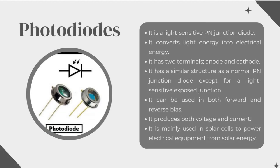Photodiodes. A photodiode is a light-sensitive PN junction diode that converts light energy into electrical energy. It has two terminals: anode and cathode. It has a similar structure to a normal PN junction diode, except for a light-sensitive exposed junction. It can be used in both forward and reverse bias, and it produces both voltage and current. It is mainly used in solar cells to power electrical equipment from solar energy.